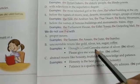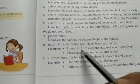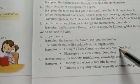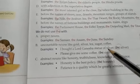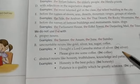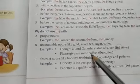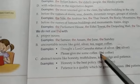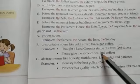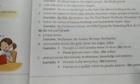For example: 'I bought a Lord Ganesha statue of silver.' This is the correct statement. We cannot use 'the silver'. Similarly, 'Please give me some coffee.' We cannot use 'the coffee', since we cannot use the article 'the' with uncountable nouns.